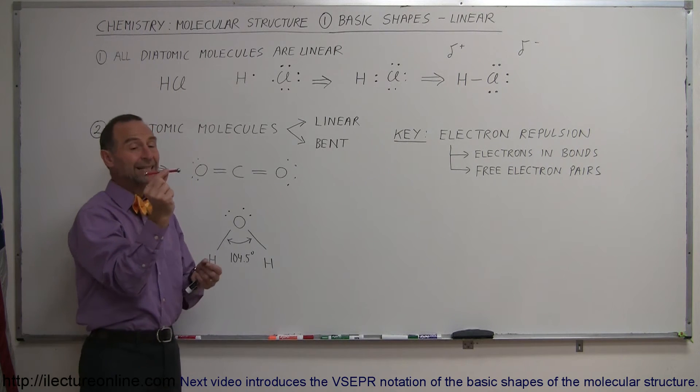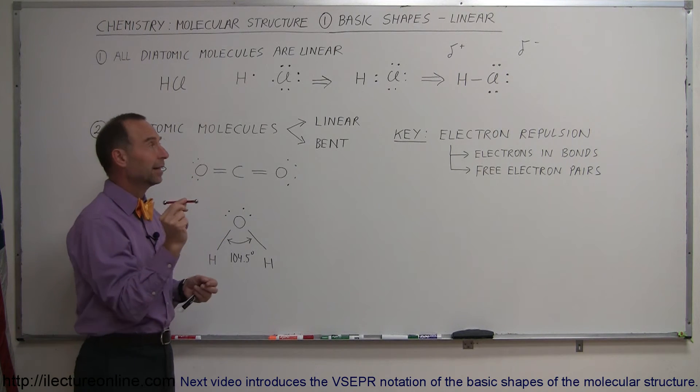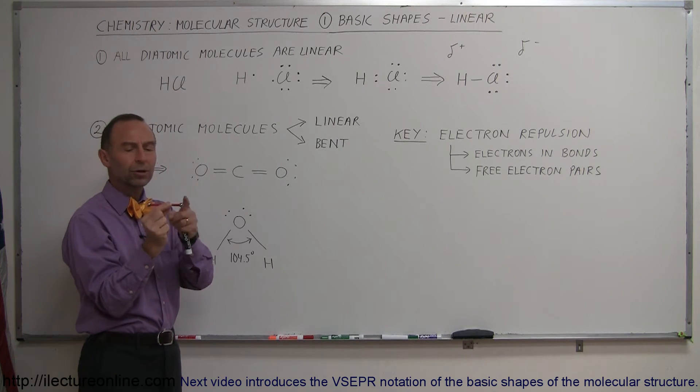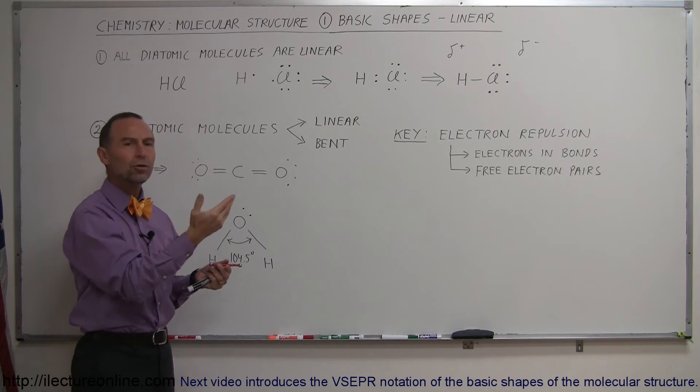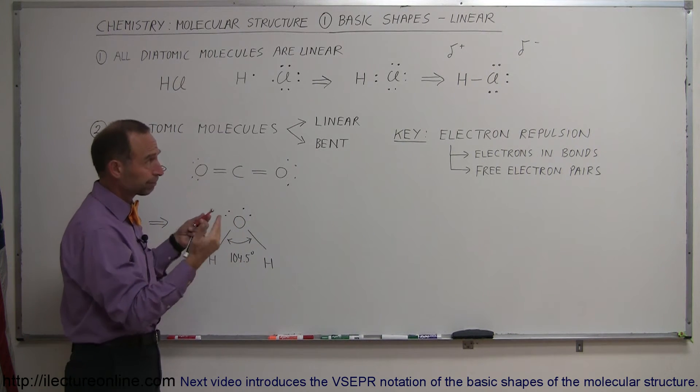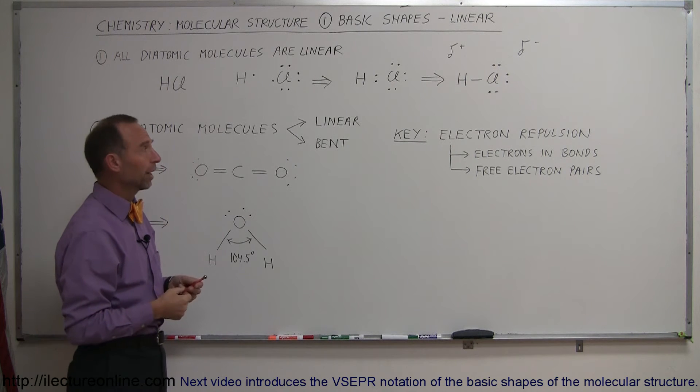You can see that anytime you only have two atoms in a molecule there's only one shape that you could possibly have - it can only be linear. It's kind of like, how do you connect two dots on a board? You can only connect it with a straight line, and therefore a diatomic molecule has to be linear.